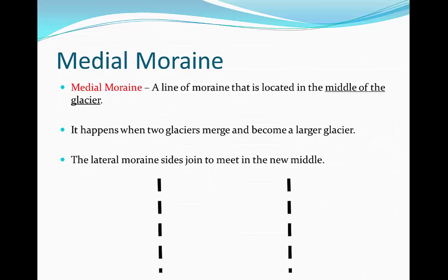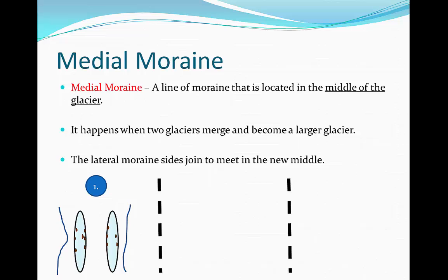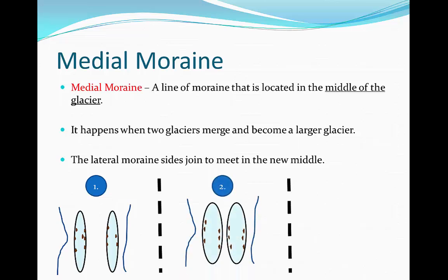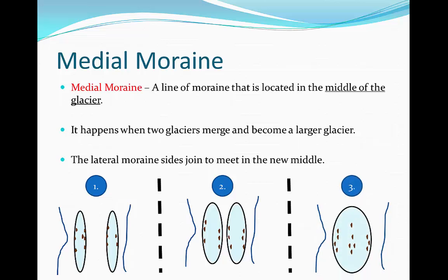This is what the process looks like. First, we have two glaciers moving together. Then they get closer and closer until, in the third step, they form together to make one massive glacier. Then the two sides of lateral moraine — on the right side of the left-hand glacier and on the left side of the right-hand glacier — form medial moraine.